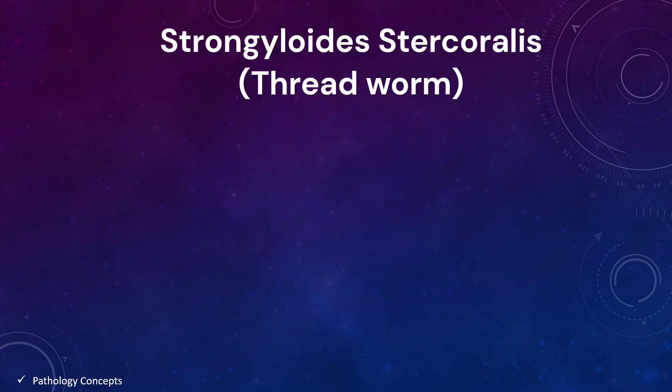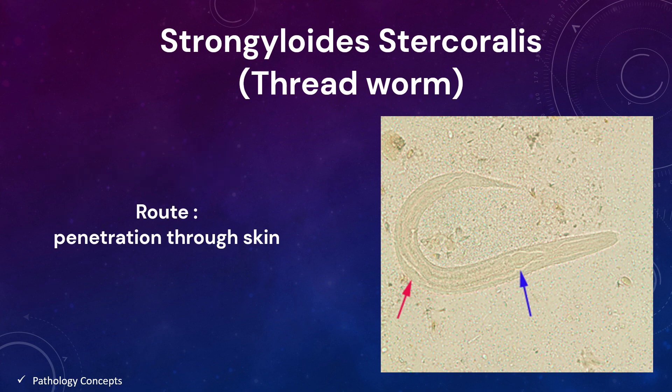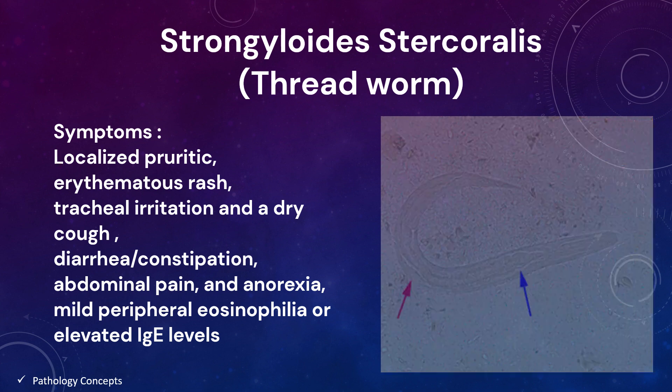Strongyloides stercoralis is also called the threadworm. The phylum is Nematoda, genus is Strongyloides. The route of infection is filariform larvae in contaminated soil, which penetrate the human skin on contact. Symptoms include a localized pruritic erythematous rash at the site of skin penetration, tracheal irritation and dry cough when larvae migrate to the lungs and up to the trachea. Intestinal symptoms include diarrhea, constipation, abdominal pain, and anorexia after larvae are swallowed. Mild peripheral eosinophilia or elevated IgE levels are observed.